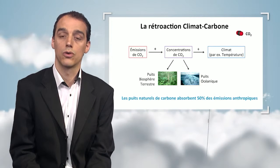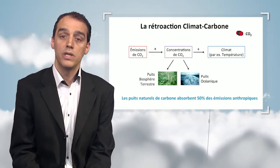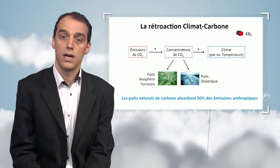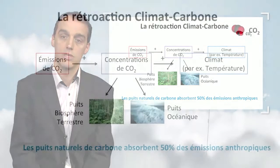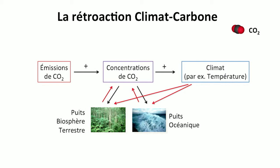I'm going to describe the positive retroactive loop by looking at the carbon cycle and the climate system. Natural sinks, such as the ocean or the land biosphere, absorb 50% of anthropogenic CO2 emissions. The climate therefore reacts to CO2 concentrations caused by these anthropogenic emissions. However, the climate may change the way in which sinks absorb CO2 — i.e., the efficacy of CO2 sinks.